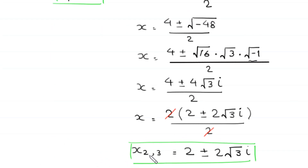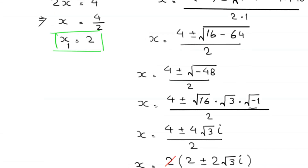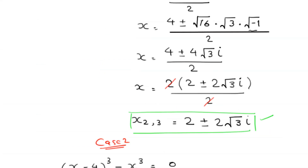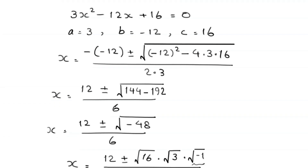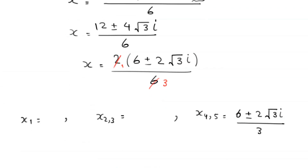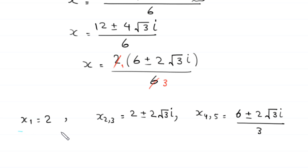So x₁ equals 2, x₂ and x₃ equal 2 plus or minus 2 root 3 i, and x₄ and x₅ equal (6 plus or minus 2 root 3 i) divided by 3. We have five solutions for this equation.